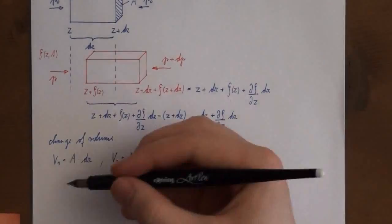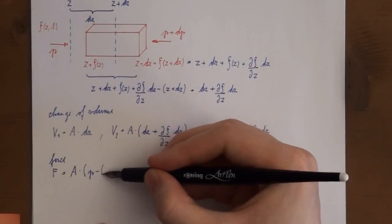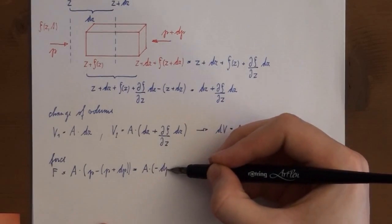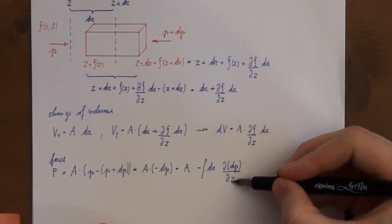As hopefully everyone knows every action causes an equal and opposing reaction. Hence the change of pressure results in the force we want to determine. We cancel P and get F equals A times minus DP. Next we expand minus DP with an integral of the derivative with respect to DZ.